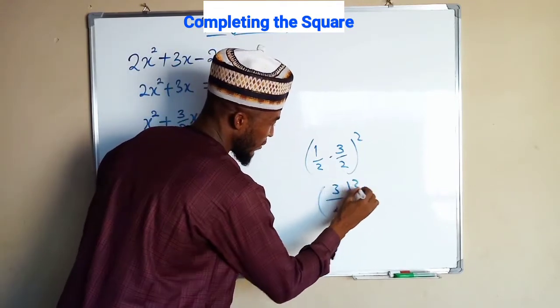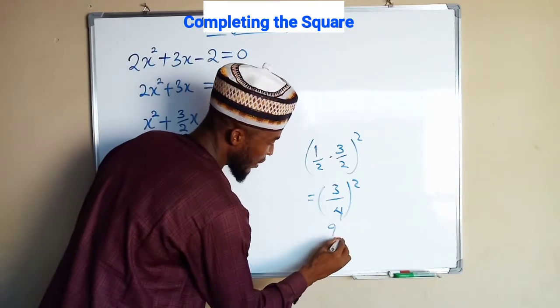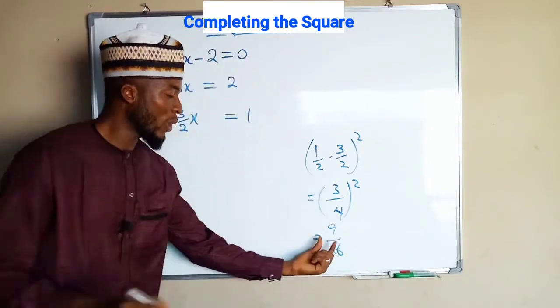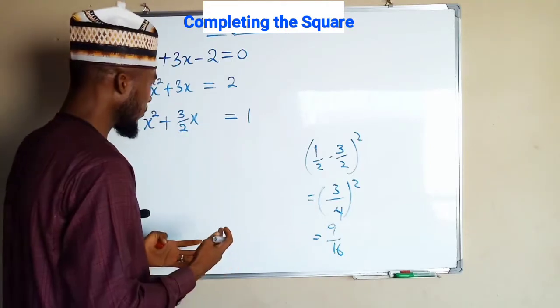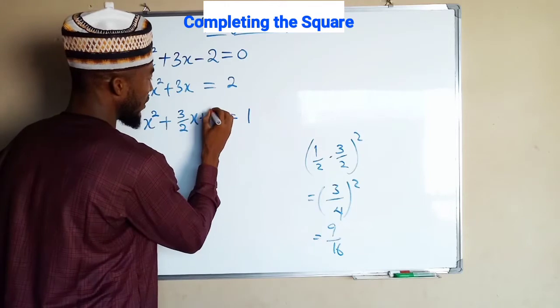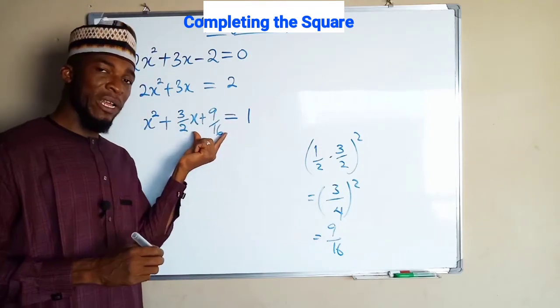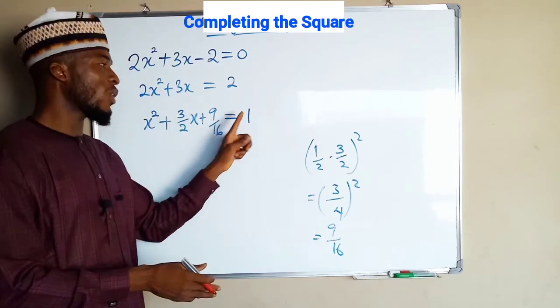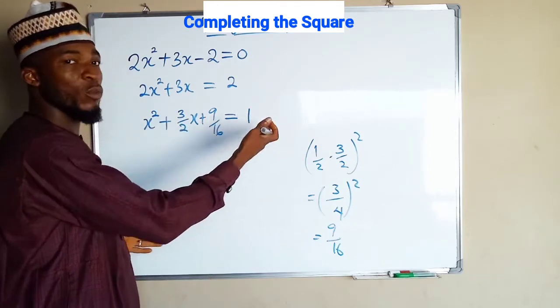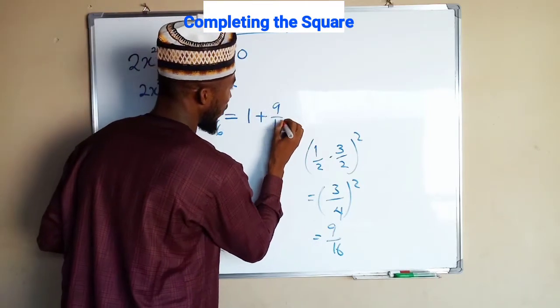This squared is 9, this squared is 16. So we are going to add this term to these two terms in order to make it a perfect square quadratic function. So we have plus 9 over 16. But initially we do not have this, I added it for the first. So we have to add it to the other side in order to make this equation balance. So plus 9 over 16.